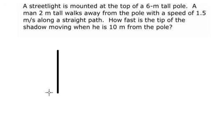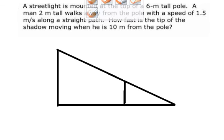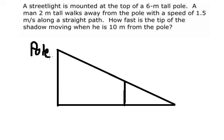First, we need to draw the diagram. So this is the pole here. This is the man. We know that the pole is 6. The man is 2.